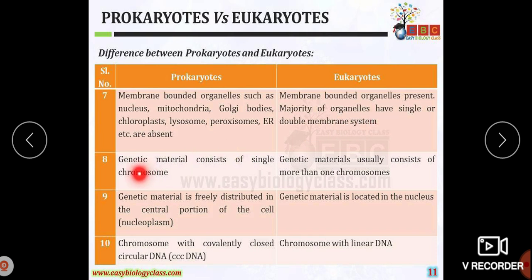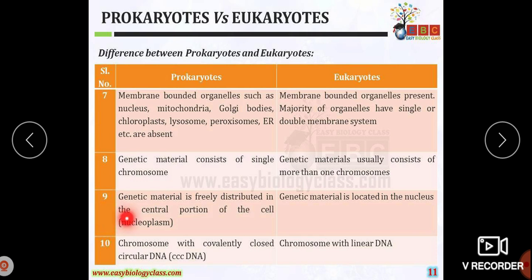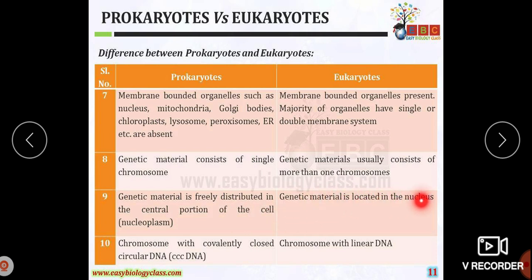The genetic material consists of a single chromosome in prokaryotic organisms, whereas in eukaryotic organisms it usually consists of more than one chromosome. In prokaryotes, the genetic material is freely distributed in the central portion of the cell, called the nucleoid, whereas in eukaryotes the genetic material is located in a nucleus.